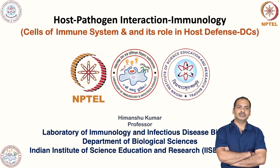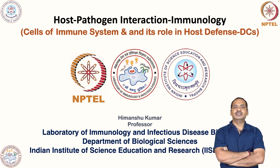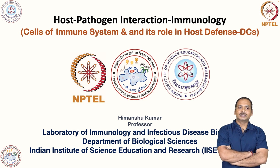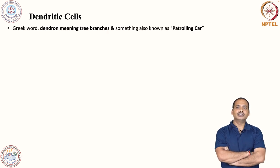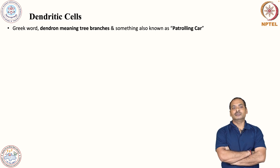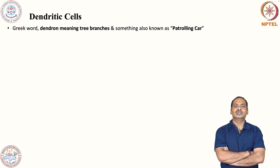Today we will move on in the same series and first discuss dendritic cells. Dendritic cells are very important in immunity. We call them dendritic cells because the name is derived from the Greek word 'dendrion' meaning branch — like branches of a tree. When first observed, this cell got its name due to its branching-like structure.